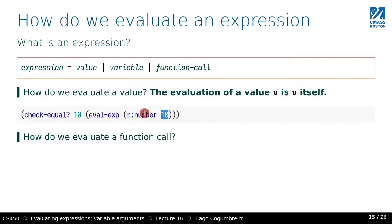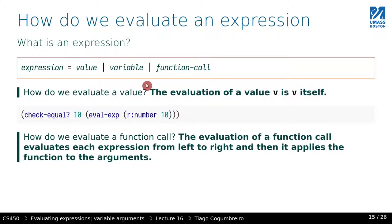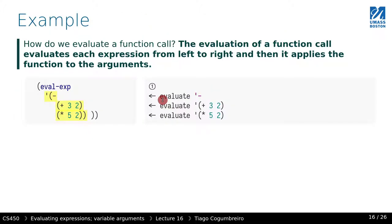How do we evaluate a function call? We go through each argument left to right and evaluate each one recursively. Once all the arguments are evaluated, we apply the function to the arguments.